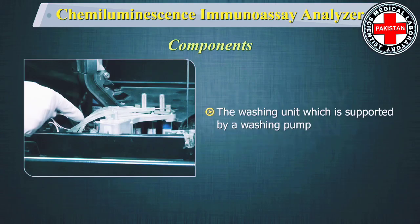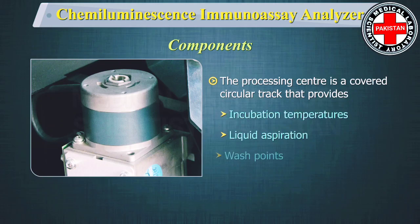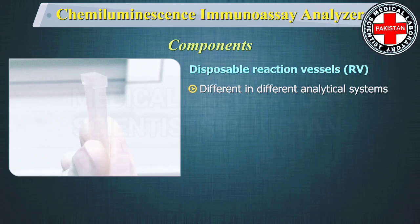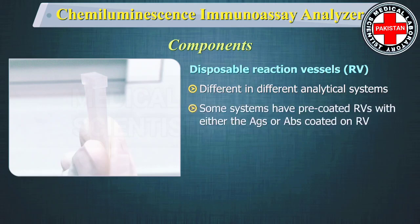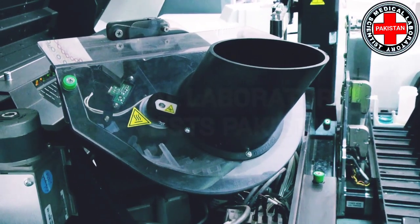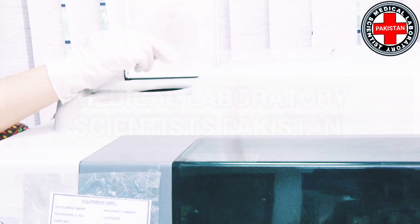The washing unit is supported by a washing pump. The processing center is a covered circular track that provides incubation temperatures, liquid aspiration, and wash points as necessary for the assay protocol. Disposable reaction vessels differ across analytical systems. Some systems have pre-coated reaction vessels with either antigens or antibodies. If an antigen is to be detected in a sample, then the corresponding antibody will be coated and vice versa. The reaction vessel is dropped into the reaction vessel loader and hopper assembly, which provides on-board storage and transports vessels into the process path.